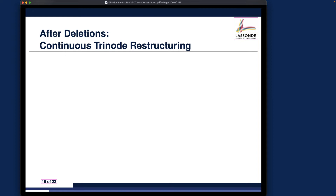To restore the balance after deletions, the procedure will be mostly the same. We still have to do the so-called trinode restructuring. The trinode means we identify a, b, and c. For insertion, you simply find the first unbalanced node along the ancestor path, then find its child and grandchild nodes. But for deletion, the way we choose b and c will be a little bit different.